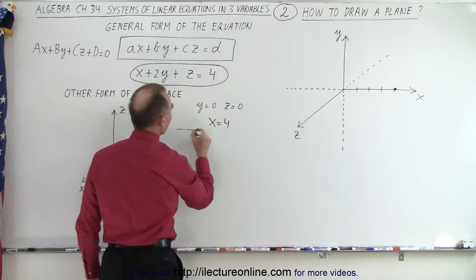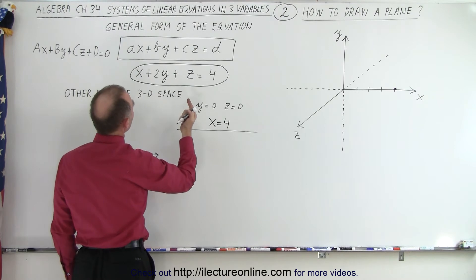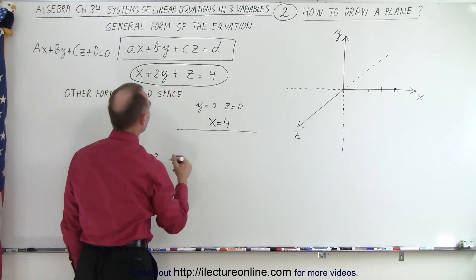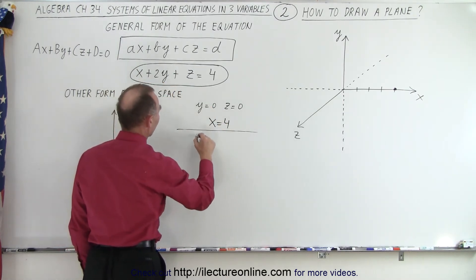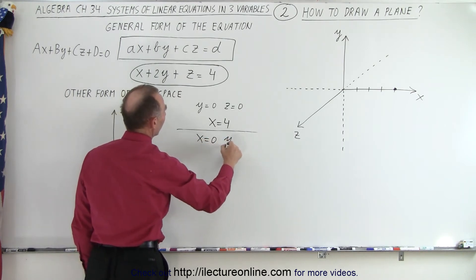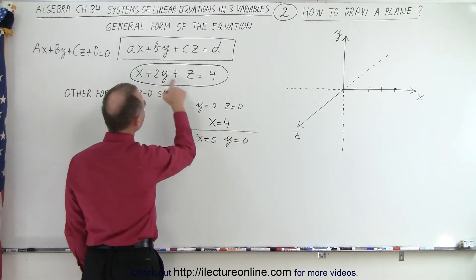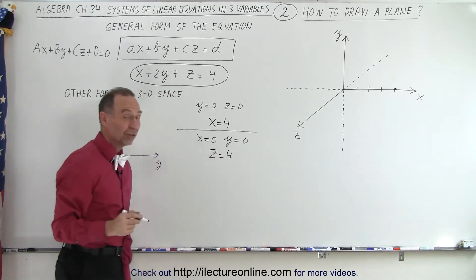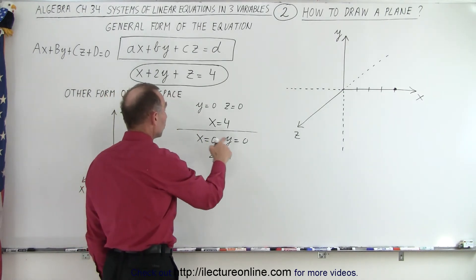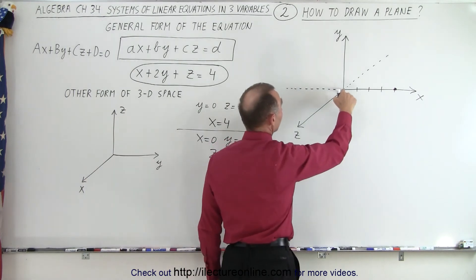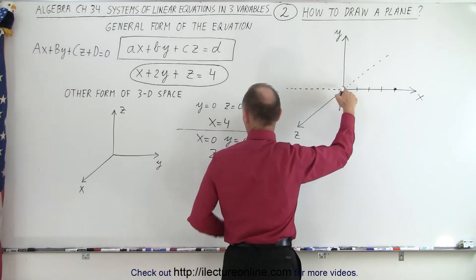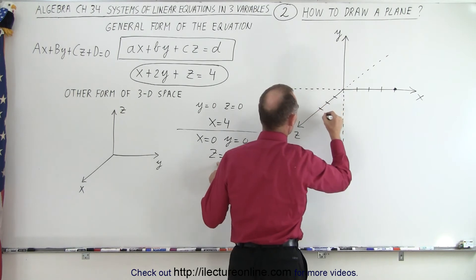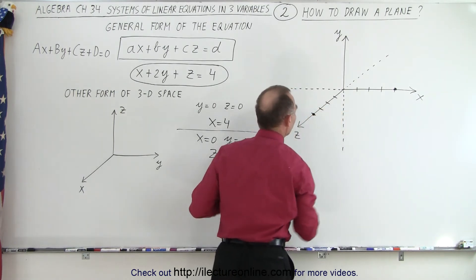Now let's let x equals zero and y equals zero. When we do that, we get z equals four. So when x and y equal zero — right at the origin of the xy plane — we move four units in the z direction: one, two, three, four. That gives us this point on the z-axis.